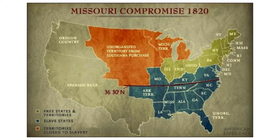That's the legislative branch — Congress — and also electoral votes to decide the president. So there's a lot of potential influence in how the federal government is going to look based on how many states are added and whether or not those states have slavery.